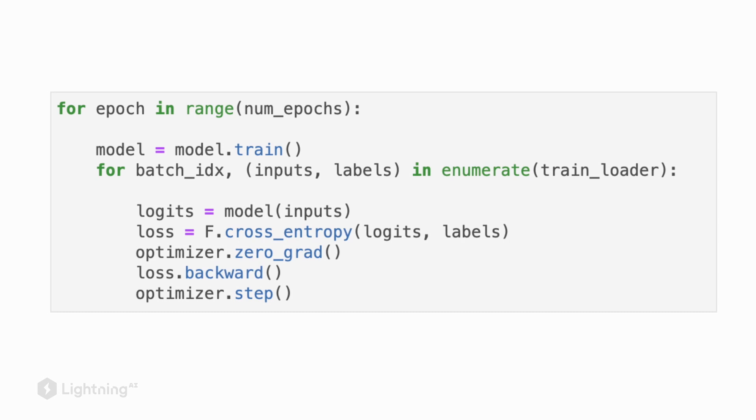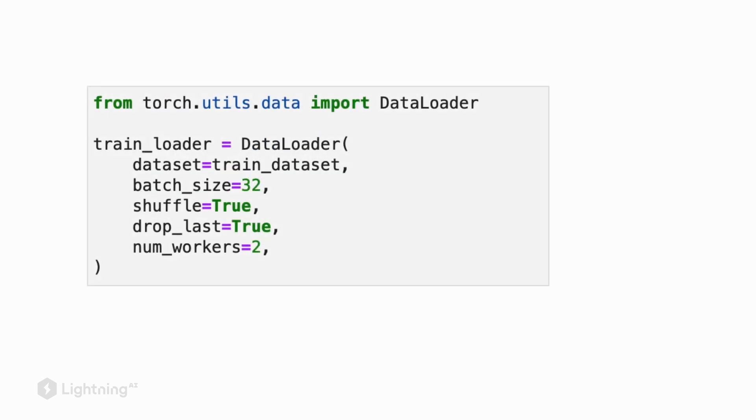But how do we implement that in code? It's actually pretty easy, because PyTorch provides us with some very convenient functionality. So in code, all we need is this train loader, which is an object based on the data loader class in PyTorch. So this train loader will, in the background, prepare the next mini-batches when we iterate over it while the model is training.